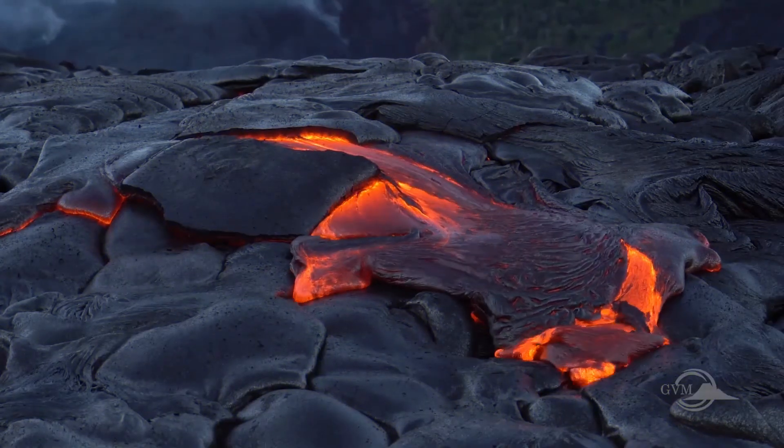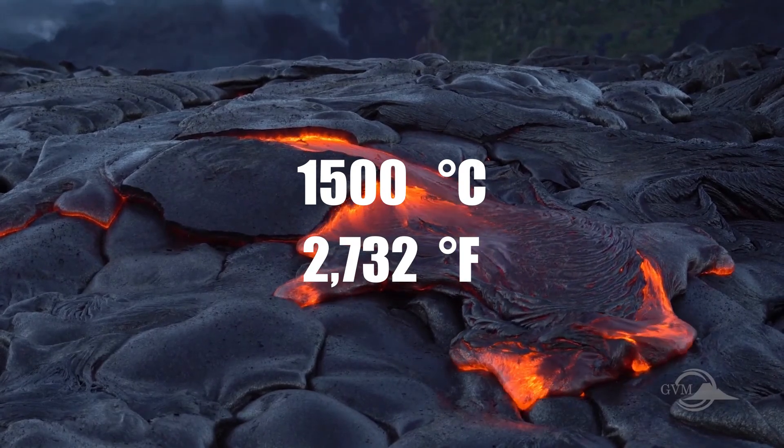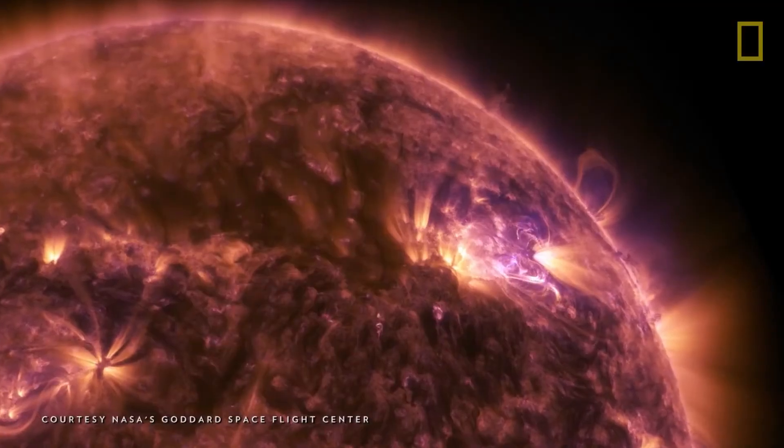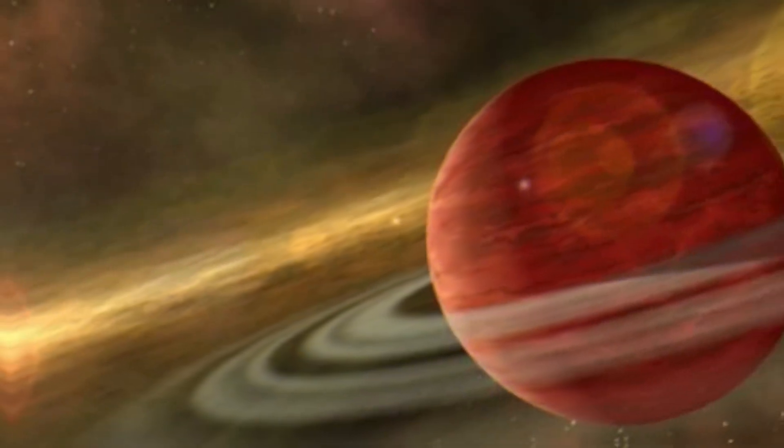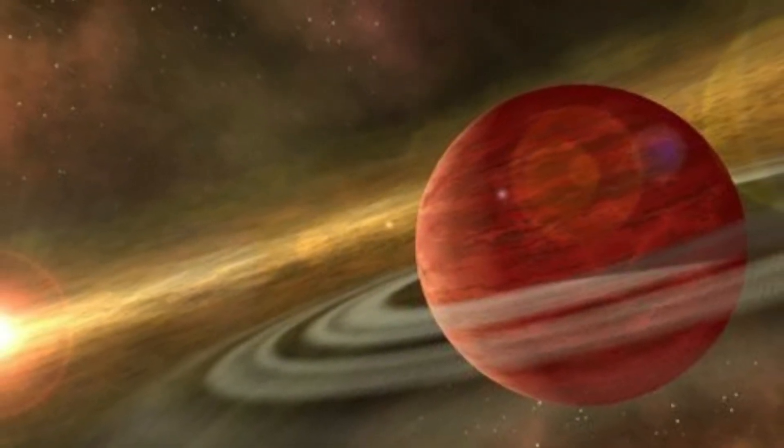Despite being so far from its star, this gas giant still has a surface temperature of 1,500 degrees Celsius, 2,732 degrees Fahrenheit. It emits most of its energy as infrared rather than visible light. HD 106906b still glows in the infrared spectrum from the residual heat left over from its formation.